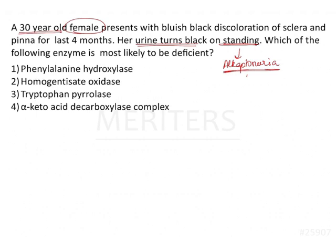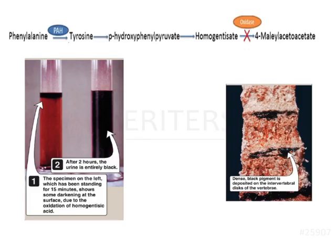In alkaptonuria there is going to be an enzyme deficiency involved in tyrosine metabolism. The question asked is which enzyme is most likely to be deficient. Looking at the metabolic pathway: tyrosine gets converted into para-hydroxyphenylpyruvate, which further gets converted into homogentisate, and then 4-maleylacetoacetate. The enzyme involved in conversion of homogentisic acid into 4-maleylacetoacetate is deficient — that enzyme is homogentisic acid oxidase — and this results in alkaptonuria.